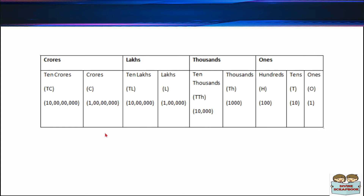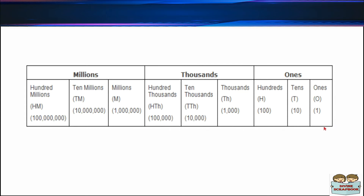Similarly, in the international system of numeration, the place value of digits goes in the sequence of 1s, 10s, 100s, 1,000s, 10,000s, 1,00,000s, millions, 10 millions, 100 millions, and so on.